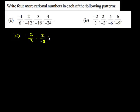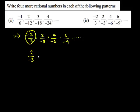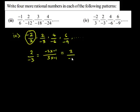The last question is: negative 2 upon 3, 2 upon negative 3, 4 upon negative 6, 6 upon negative 9, and so on. Here the first term is negative 2 upon 3. The second term, 2 upon negative 3, can be obtained when negative 2 upon 3 is multiplied by negative 1 both in the numerator and in the denominator — so negative 2 times negative 1 is 2, upon 3 times negative 1 is negative 3.